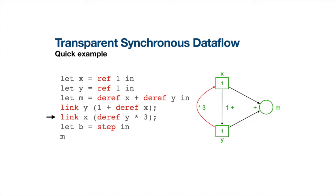We modify the dependency of X to Y times 3, and now we have a circular dependency. In the next line, we have the step command, which re-evaluates all the cells using the current values of other cells. In this case, X should be re-evaluated to 1 times 3, and Y should be re-evaluated to 1 plus 1. After that, we return the value M, which is basically 2 plus 3, which is 5.